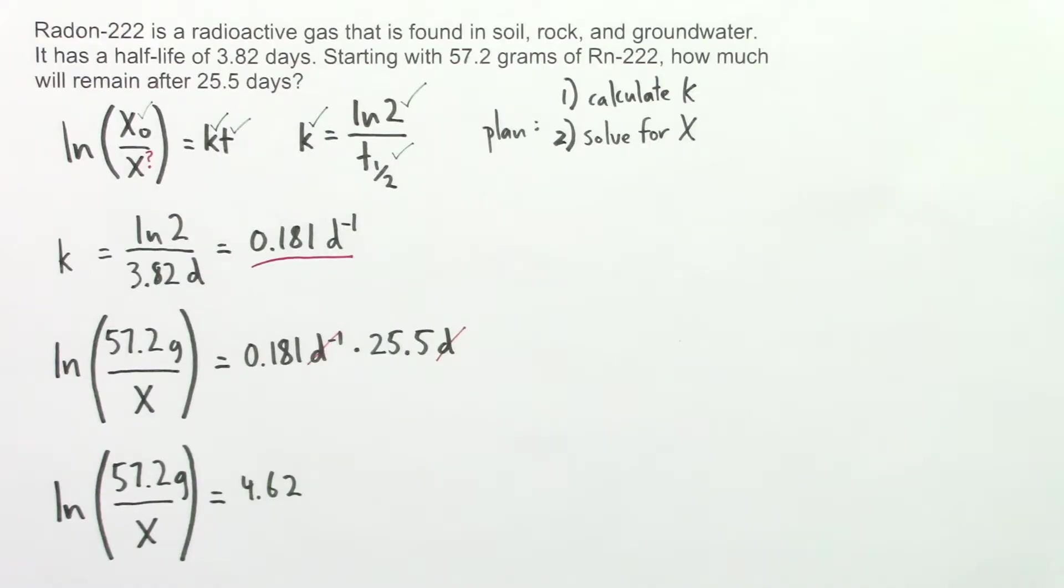Now what we want to do is start rearranging this equation so that x is by itself. We're going to need to get rid of this natural log, of this ln function that's applied to this fraction. To get rid of an ln function, we take this and we put it as an exponent on e. We take e and we raise it to this as an exponent. And anything that we do to one side of the equation we have to do to the other. So we'll take e and we'll raise it to this. And then on the other side of the equation we'll take e and we'll raise it to this.